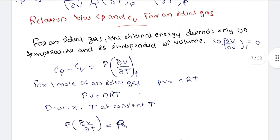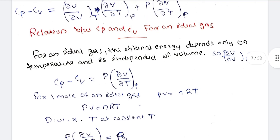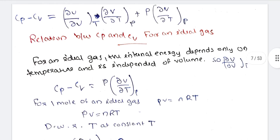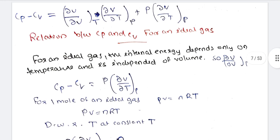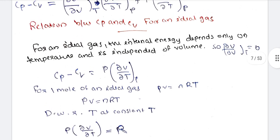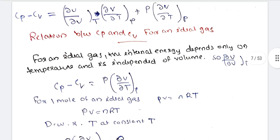For an ideal gas, internal energy depends only on temperature and is independent of volume. Therefore, (∂U/∂V) at constant T equals zero.